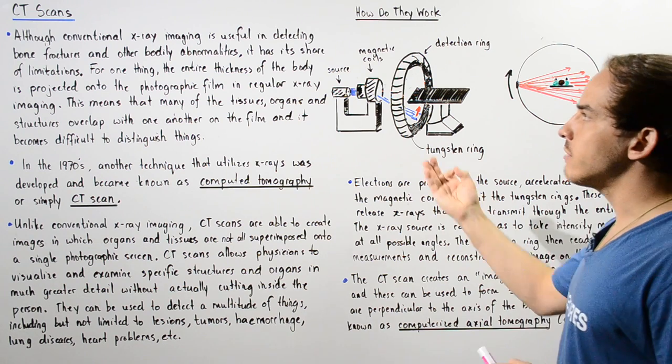Let's take a look at the following diagram which describes how our CT scan actually looks like and how it works. We have different important compartments that compose our entire CT scan machine: a source, magnetic coils, the detection ring, and a region on the detection ring that contains a tungsten ring, which is a special type of material.